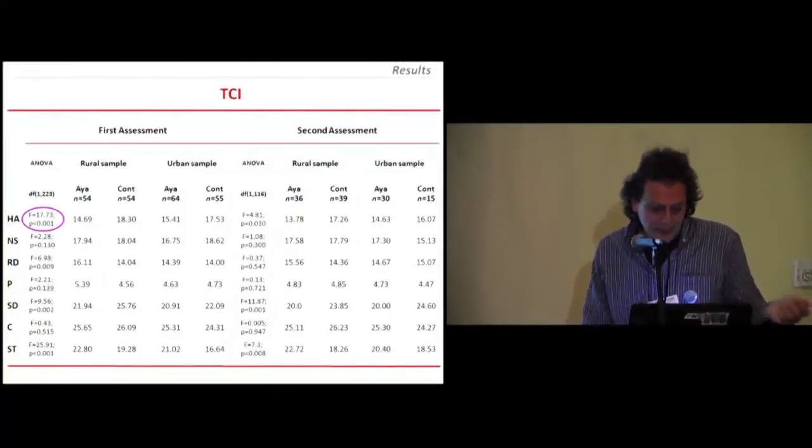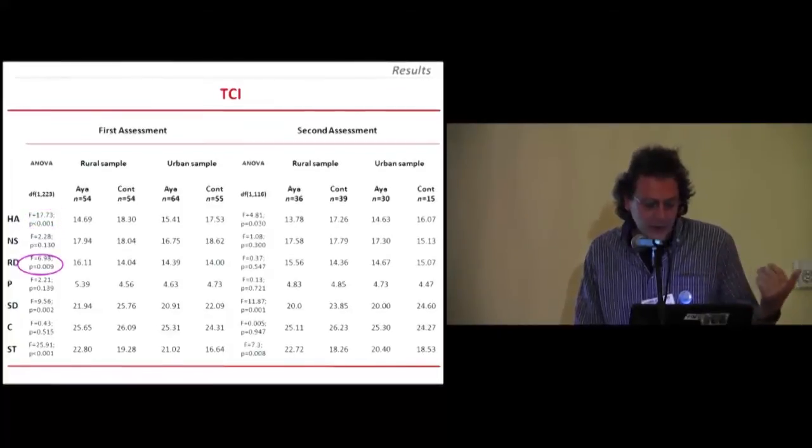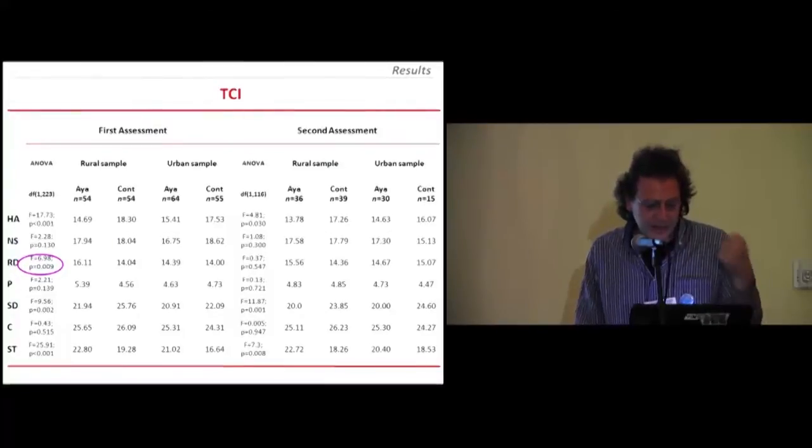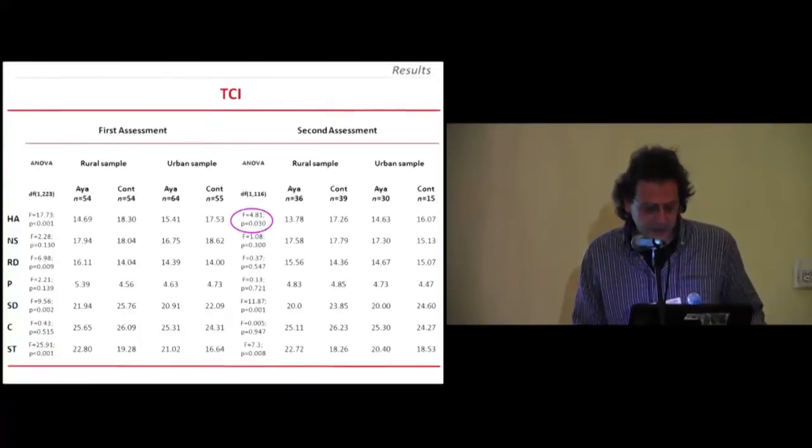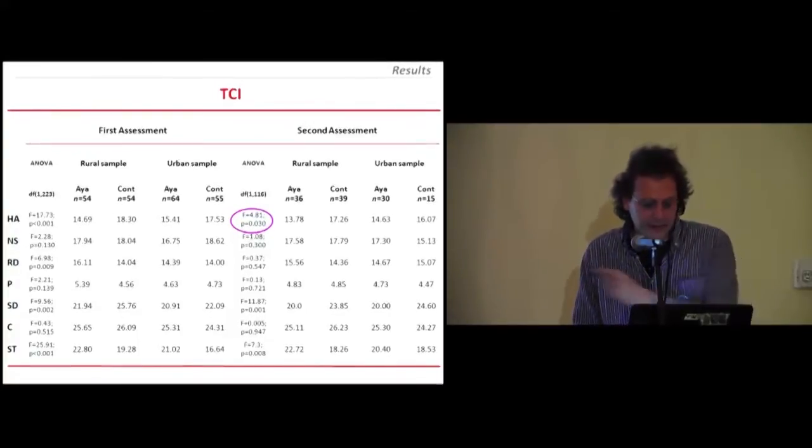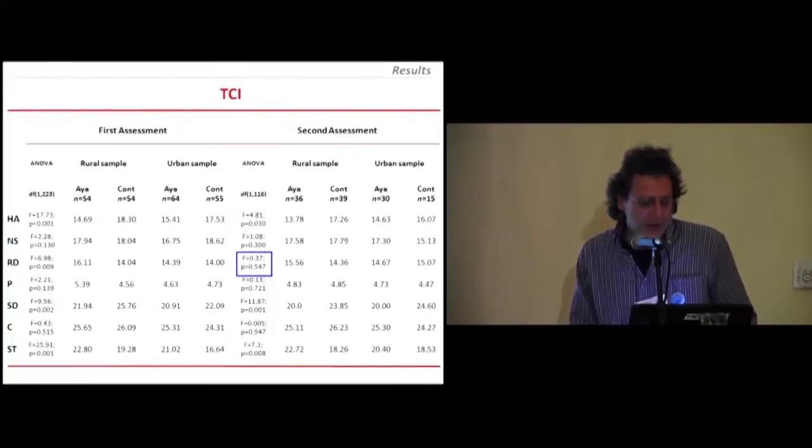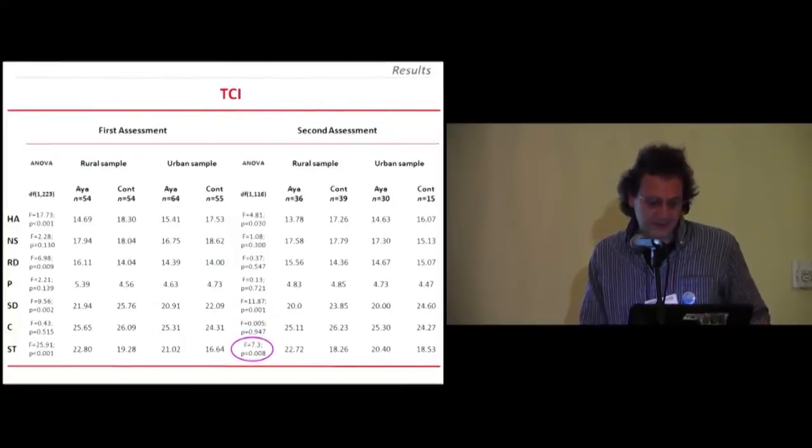In personality, we found that in harm avoidance, the ayahuasca group scored lower than the control group. In self-directedness and reward dependence scored higher, and also in self-transcendence obtained higher scores than the control group. These scores were maintained on time at the one-year follow-up for harm avoidance, self-directedness, and self-transcendence.